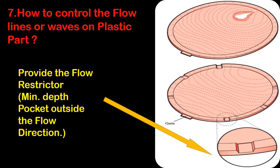Question number seven: how to control the flow lines or waves on a plastic part? As per the shown figure, we have to design flow restrictors with minimum depth outside the flow direction.